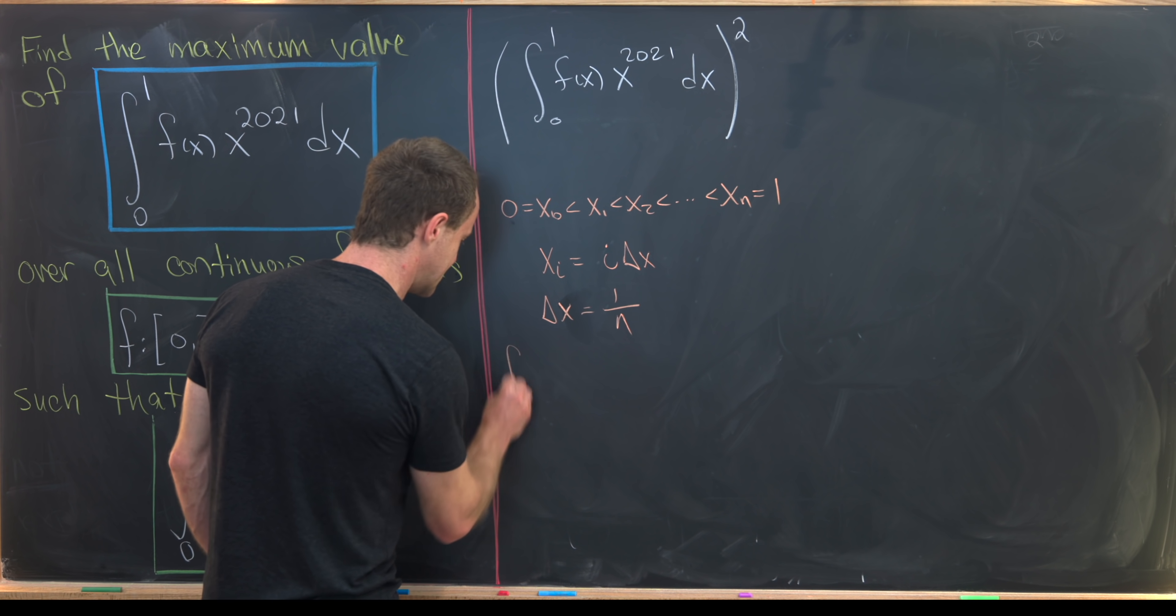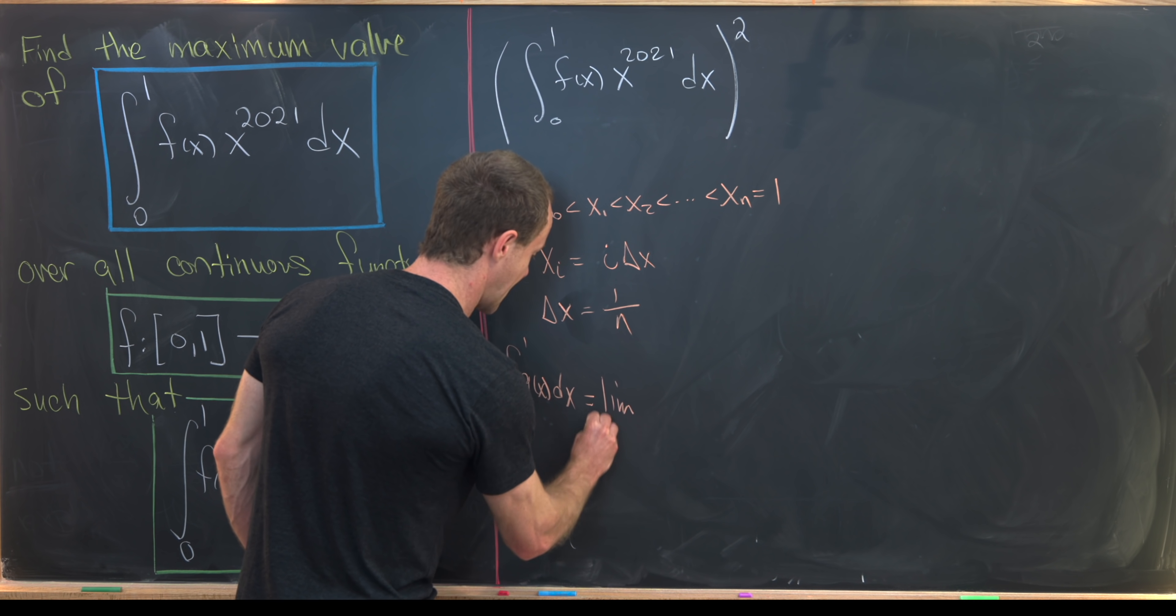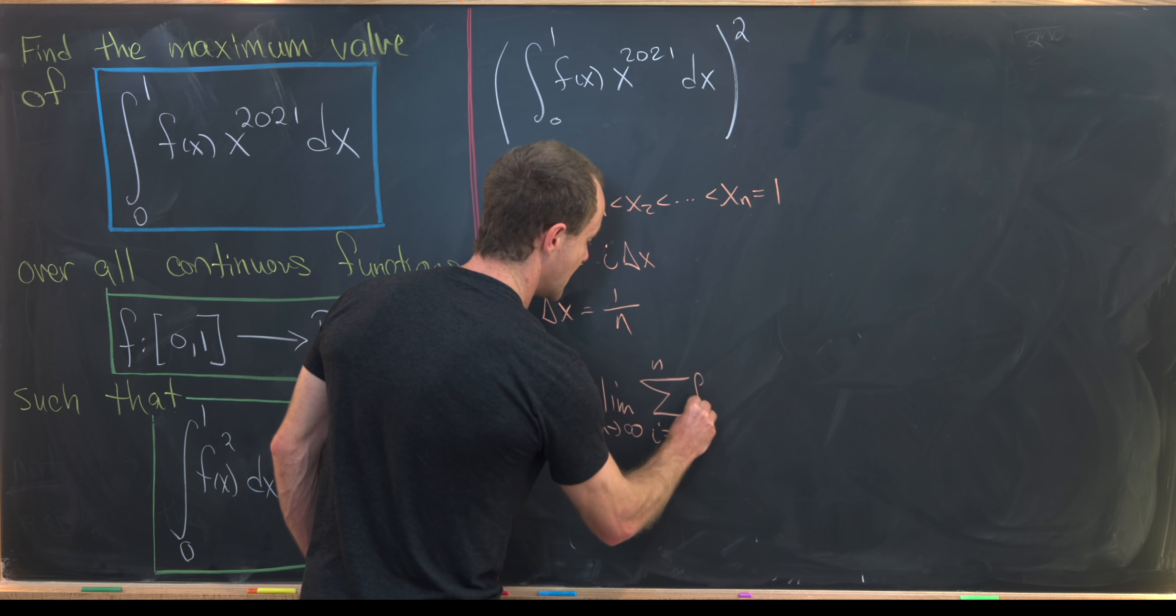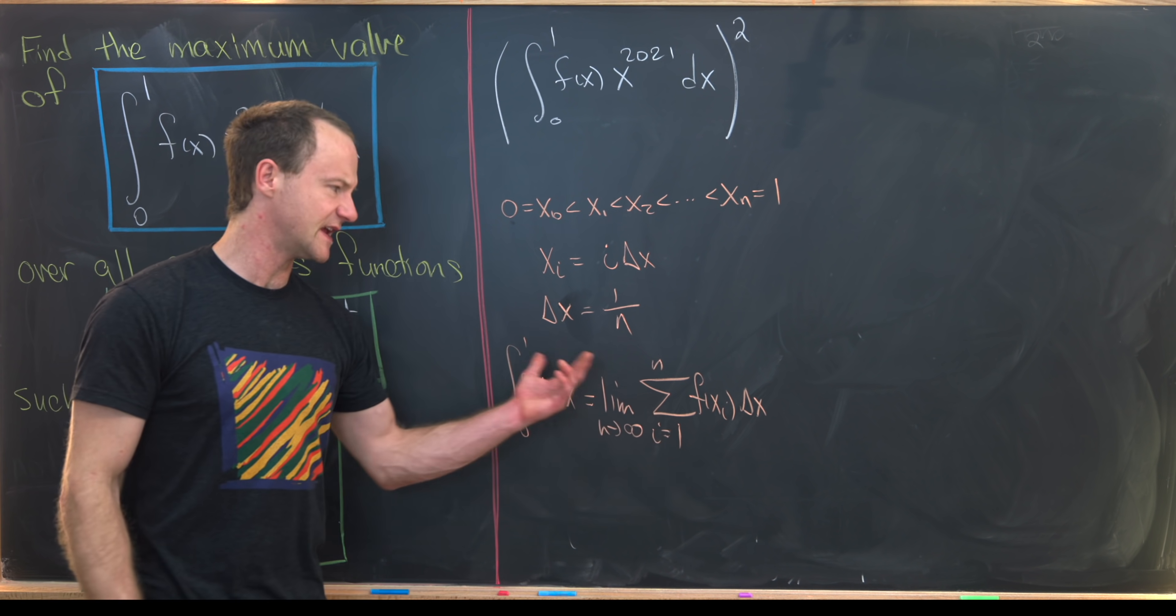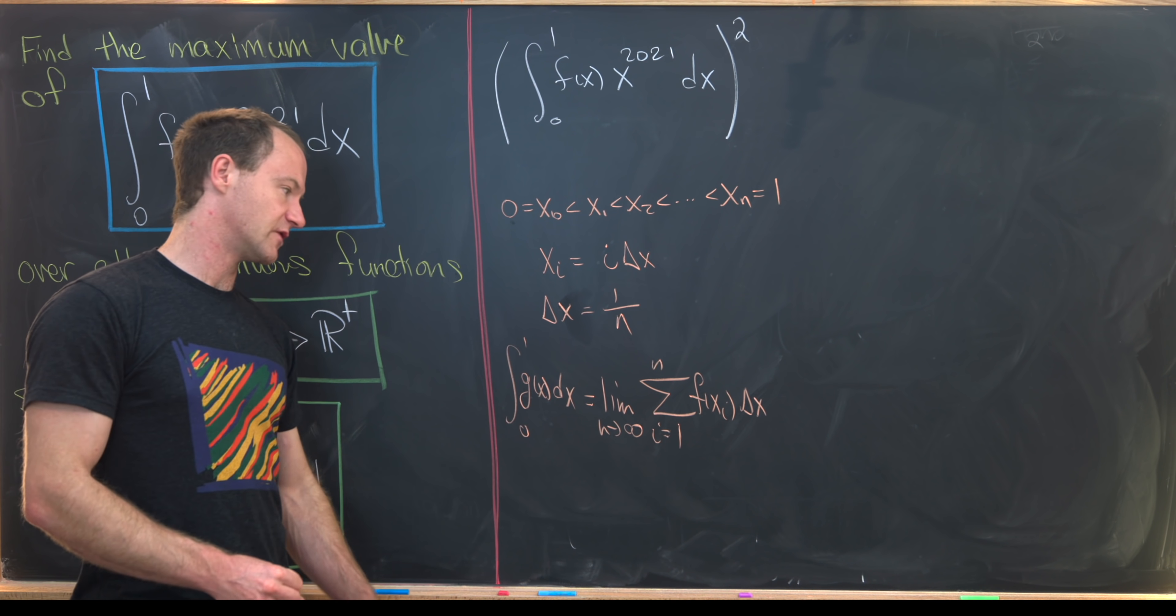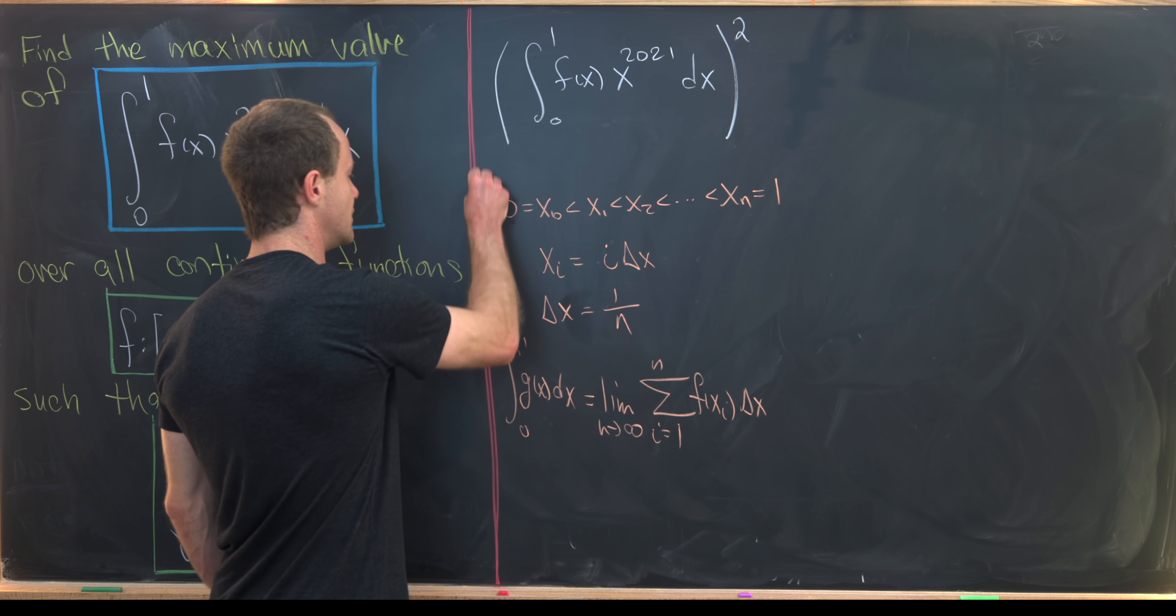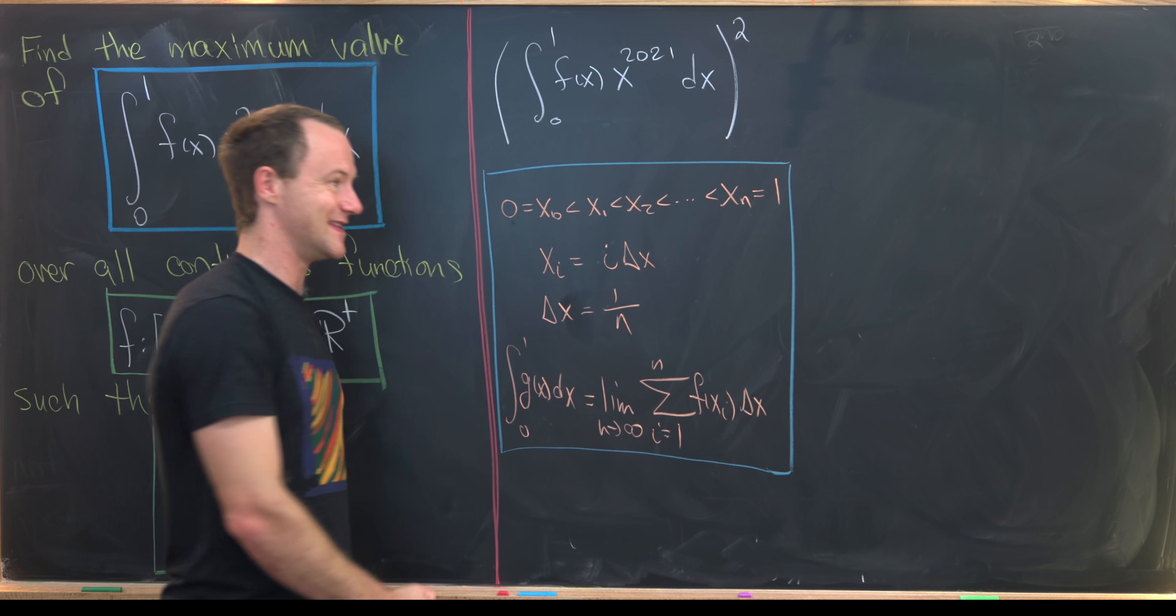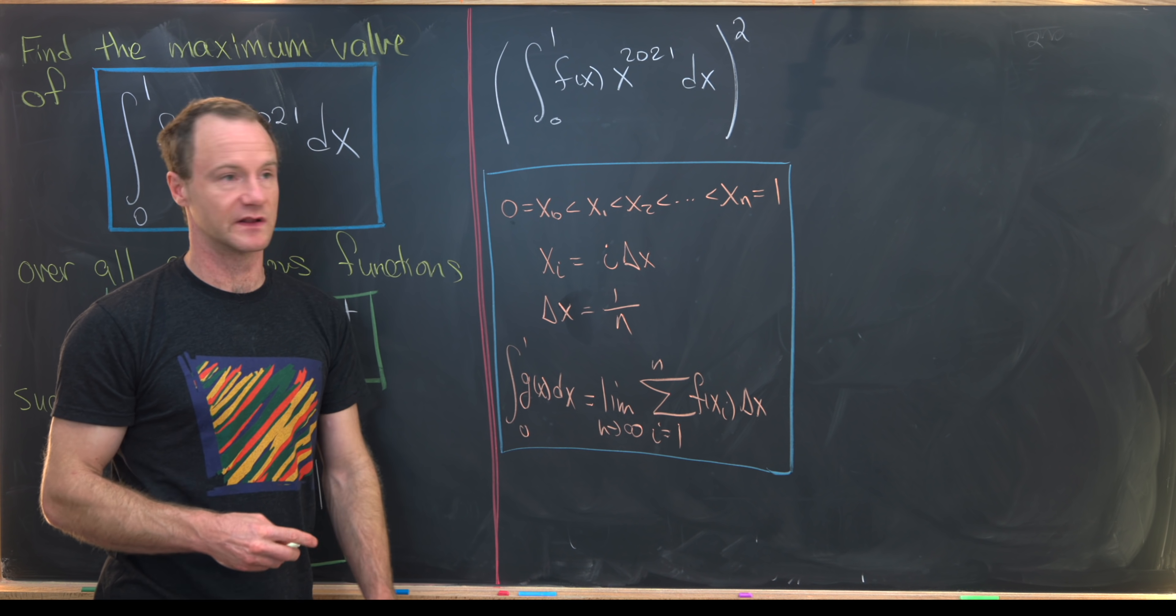Let's recall that the definition of the definite integral of a function g(x) between 0 and 1 is the limit as n goes to infinity of the sum as i goes from 1 to n of f(xi) times delta x. Here we're taking a right-hand or left-hand Riemann sum, but since we're taking the limit, it doesn't really matter. This is what we'll use to turn this integral into a sum where we can apply the standard Cauchy-Schwarz inequality instead of the Cauchy-Schwarz inequality for integrals.